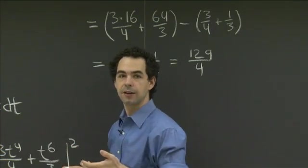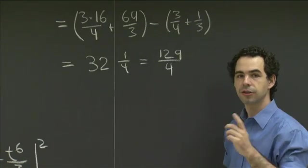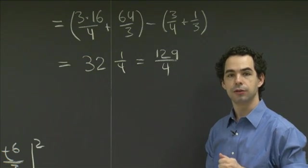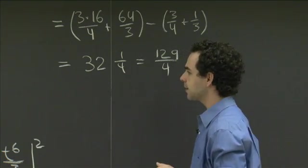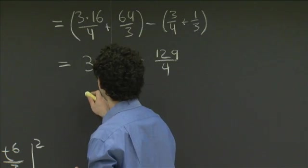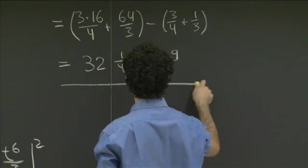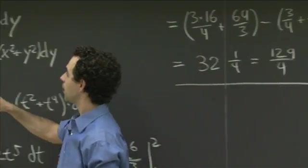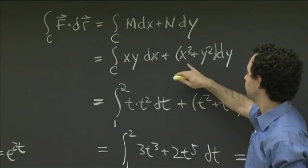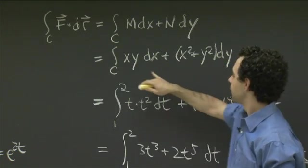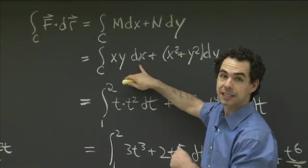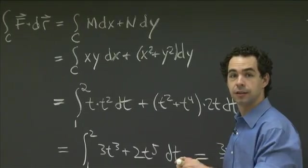So now let's go back and do it again using this alternate parameterization. So in this alternate parameterization, we had x equal e to the t and y equal e to the 2t. So in that case, that means that dx is e to the t dt and dy is 2e to the 2t dt. So our integral that we want, what we want, is equal to the integral of xy dx, which is e to the t times e to the 2t times dx, which is e to the t dt.